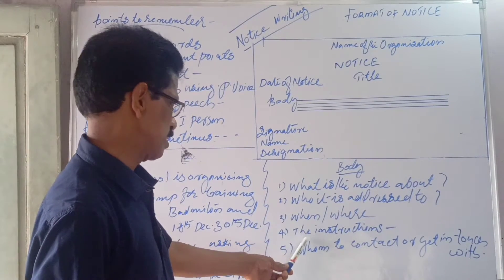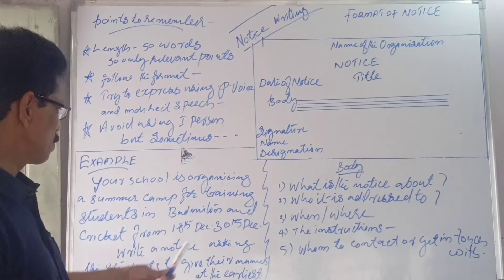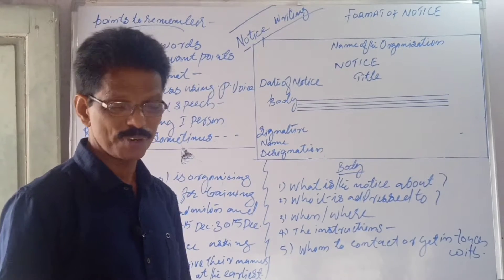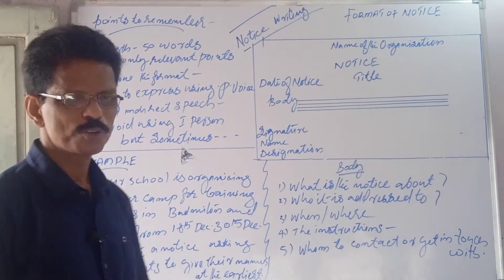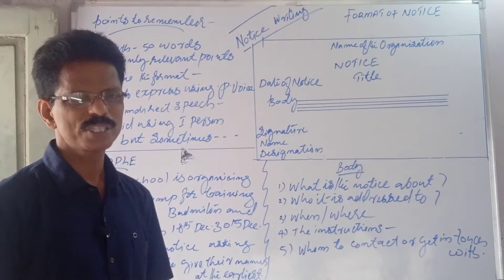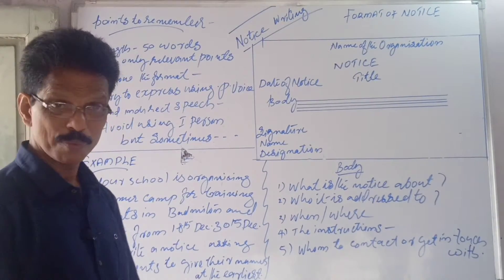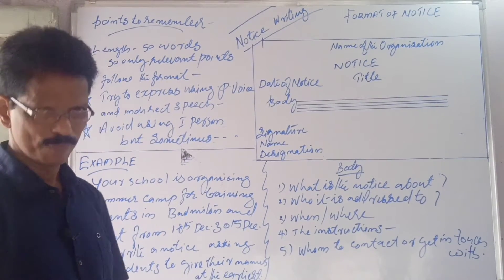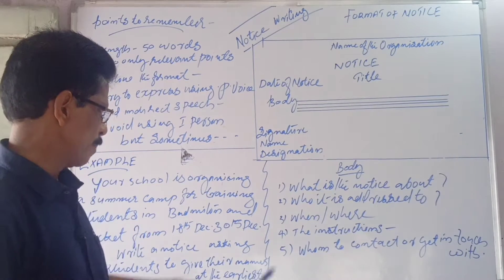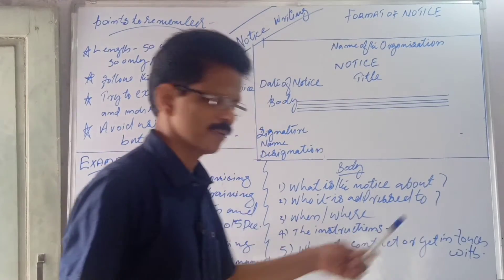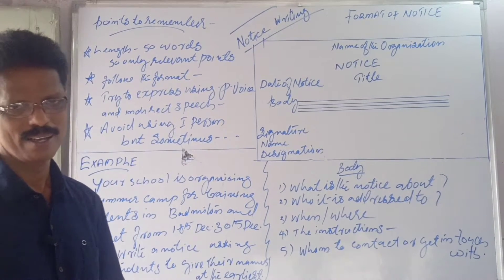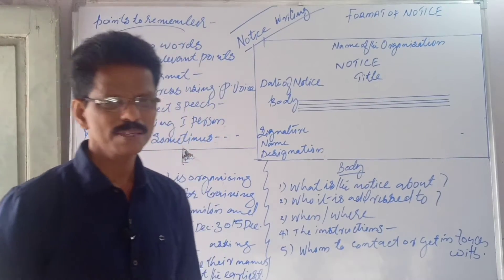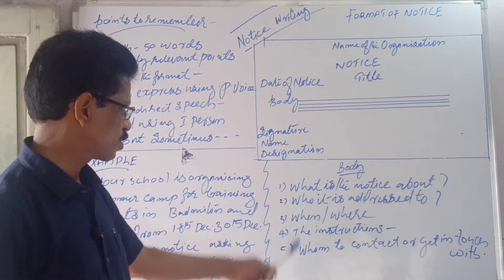Then the instructions — what you have to do: give your names to the following people. You have to mention whom to give the names to — it could be a sports secretary, a class teacher, or someone in charge. Then, whom to contact or get in touch with. So you have to take care of these five things that should be there in the body of the notice.